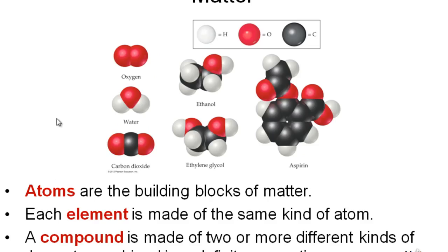Atoms are the building blocks of matter — the smallest particle which retains its chemical properties. Each element is made of the same kind of atoms. If you take an element, say gold, it doesn't matter where you take the atom from; it will always have the same chemical properties. A compound has to be made of two or more different kinds of elements that combine in a definite proportion. In a chemical compound, that proportion is always fixed.